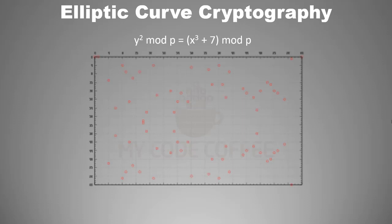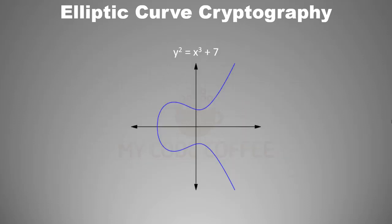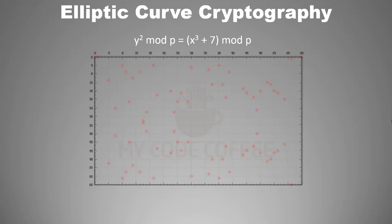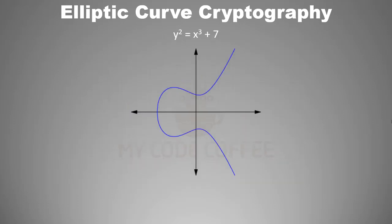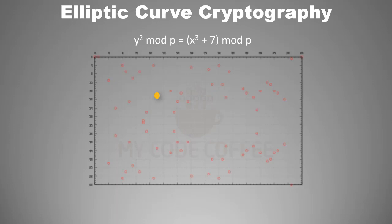However, these dots have the same properties as the points on an elliptical. In an elliptical, if you draw a line it will intersect at at most three points — this is true even for this pattern of dots. If you draw a line starting from any dot, it will cut at at most two more dots. The second property is that every point in an elliptical has a reflection in the x-axis, and this is also true for the dot pattern from SECP256k1.